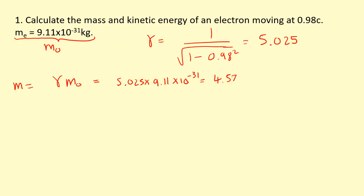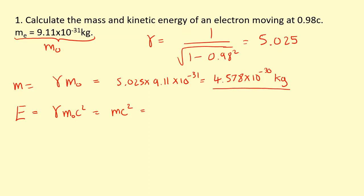This gives 4.578 times 10 to the minus 30 kilograms, so you can see the electron appears to have a larger mass. Now to work out the kinetic energy, I first work out the total energy. The total energy equals the rest mass energy times gamma, which can also be written as the apparent mass times the speed of light squared. Taking that apparent mass value and multiplying by c-squared gives a total energy of 4.12 times 10 to the minus 13 joules.